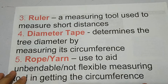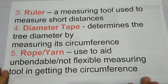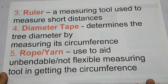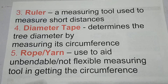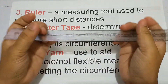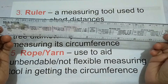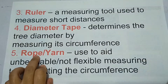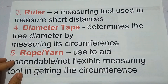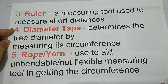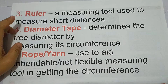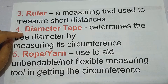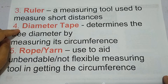Another one is the ruler — a measuring tool used to measure short distances. Ito nga lang meron ako dito sa bahay, ruler. And then, the diameter tape, which determines the tree diameter by measuring its circumference. Itong diameter tape, ito yung ginagamit naman sa mga puno.